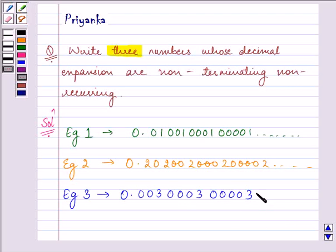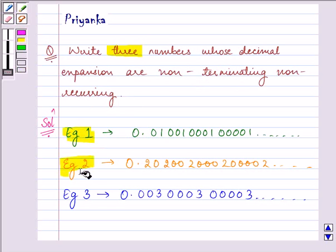This procedure can continue in this manner. So these are the three numbers which explain what non-terminating, non-recurring decimal expansions are all about. I hope you enjoyed this session. Bye for now.